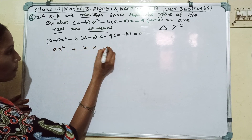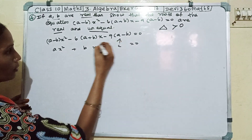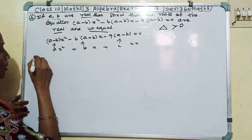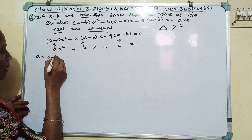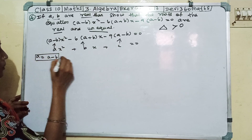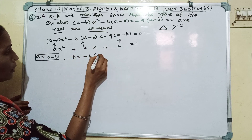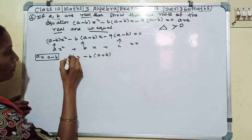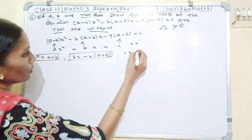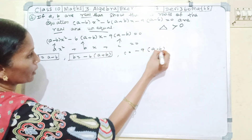Comparing with Ax squared plus Bx plus C equals 0: the value of A is (a minus b), B is equal to minus 6(a plus b), and C is equal to minus 9(a minus b).